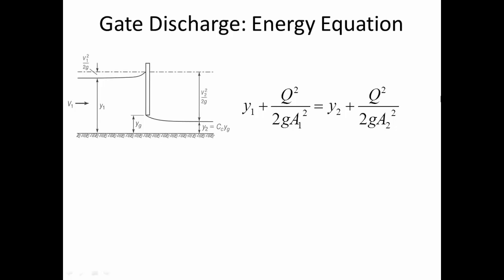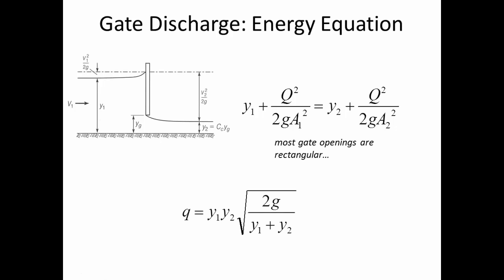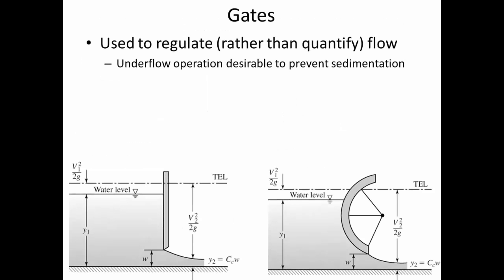The energy at location 1 is equal to the energy at location 2. Rearranging that expression, we can calculate the flow per unit width for this rectangular gate in terms of the upstream depth Y1 and the downstream contracted depth Y2. The coefficient of contraction usually varies from 0.59 to 0.62. Here are illustrations of a rectangular gate and that curved gate from the earlier photo.